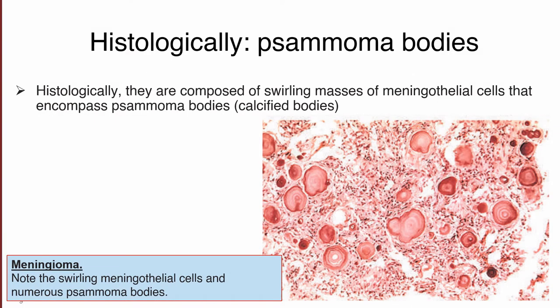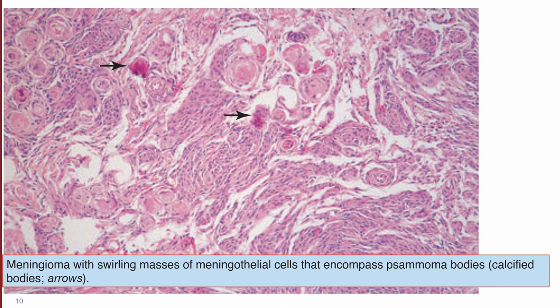Regarding histology of meningioma, Psammoma bodies are a classical hallmark. Please appreciate the whorling (rolling) masses of meningioma cells and areas of calcification — these are typically called Psammoma bodies. Note that Psammoma bodies are not found only in meningioma; they can also be found in papillary carcinoma of the thyroid, somatostatinoma, malignant mesothelioma, and prolactinoma. However, in the context of brain tumors, Psammoma bodies are the classical hallmark for meningioma.